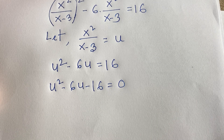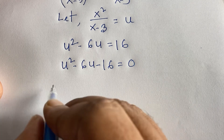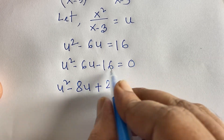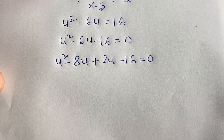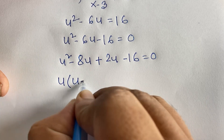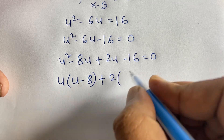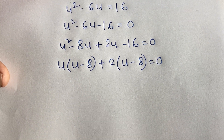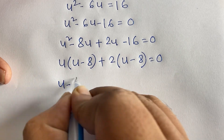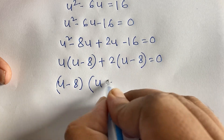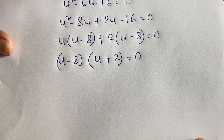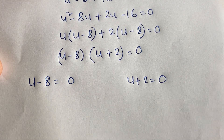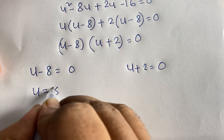Using the middle factor method: u² - 8u + 2u - 16 = 0, since 2 × 8 = 16. Factoring: u(u-8) + 2(u-8) = 0, so (u-8)(u+2) = 0. We get two cases: u - 8 = 0 and u + 2 = 0.